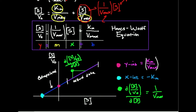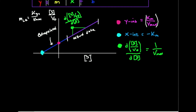Another difference is the slope of the line. In a Lineweaver-Burk plot the slope was Km over Vmax. In the Haynes-Wolf plot, if you take the derivative of substrate concentration over V0 with respect to substrate concentration, it's actually just one over Vmax. So let's do a quick abstract example, and then in the next video we'll look at specific examples with numbers.